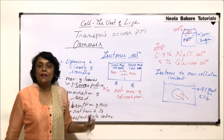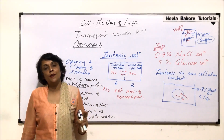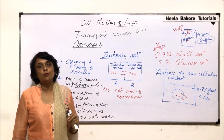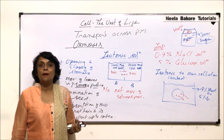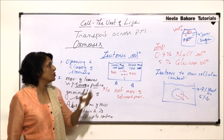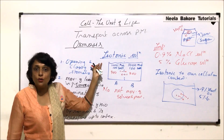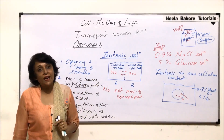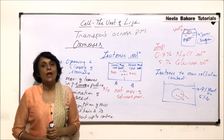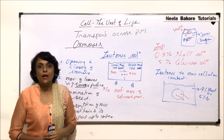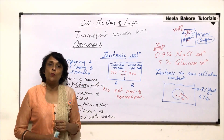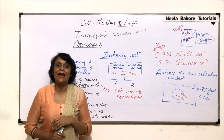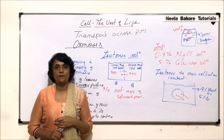We have now understood everything about osmosis: its definition, what happens to cells in hypo and hypertonic conditions, isotonic solutions, and the applications of osmosis. In the next part we will take up the other two processes of passive transport — diffusion and facilitated diffusion.